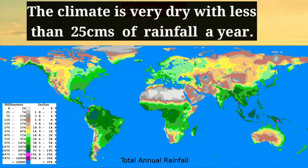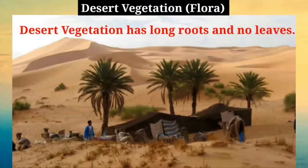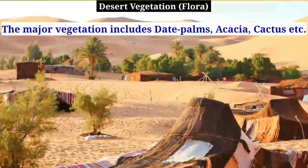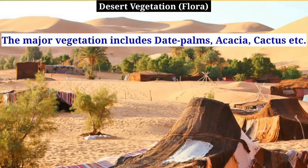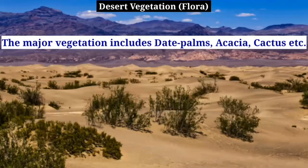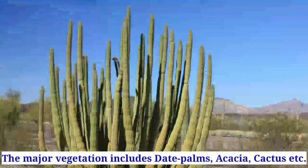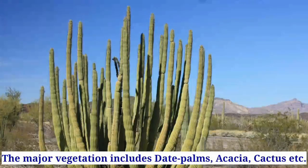The climate is very dry with less than 25 centimeters of rainfall a year. The desert vegetation has long roots and no leaves. The major vegetation includes date palms, acacia, cactus, etc.